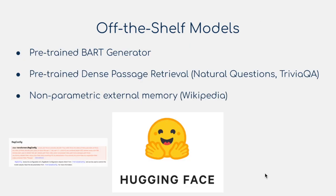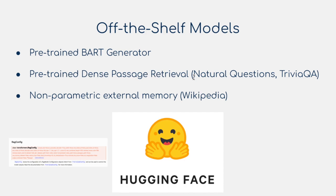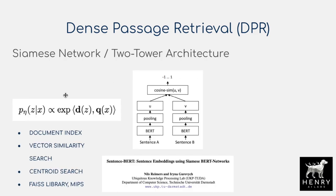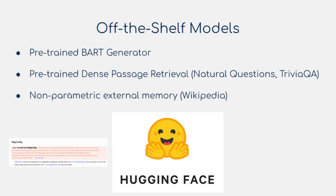Another really interesting detail about the implementation is how the authors take off-the-shelf pre-trained models and integrate them into this framework and then train further. You start with a pre-trained BART generator that has been pre-trained on language modeling, and you also have the pre-trained dense passage retrieval — trained by fetching documents containing answers to questions in Natural Questions and Web Questions — along with the non-parametric external memory, the Wikipedia corpus. You could imagine taking out any one of these individual components and replacing it with something else — for the generation, the document and query encoding, or the non-parametric external memory source, such as a knowledge graph.